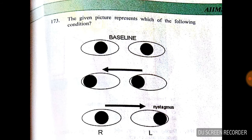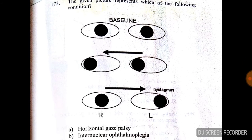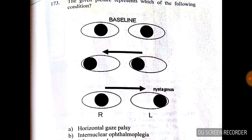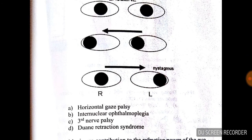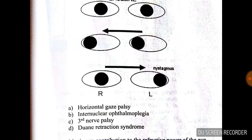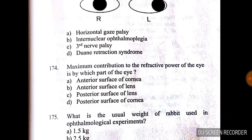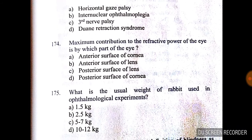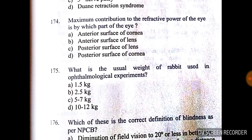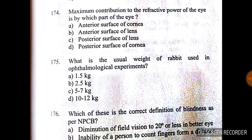Question number 173: the given picture represents which of the following conditions? The right eye is normal; the left eye shows nystagmus. The answer is B — internuclear ophthalmoplegia.